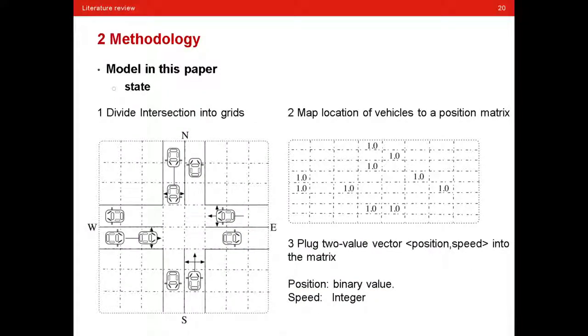Now let's figure how the paper models traffic light control problem in the view of reinforcement learning. As we all know, a traditional reinforcement learning model consists of three basic elements: the state, the action, and the reward. Now let's begin with the state definition.